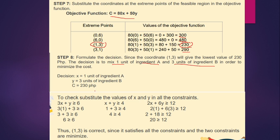To check, substitute the values of x and y in all the constraints: 3(1) + 3 ≥ 6, which is 6 ≥ 6, yes. 1 + 3 ≥ 4, which is 4 ≥ 4, check. 2(1) + 6(3) ≥ 12, which is 2 + 18 = 20 ≥ 12, yes. Thus (1,3) is correct since it satisfies all the constraints. For minimization, find the lowest value of cost. It's the same process as maximization. That would be all, thank you.